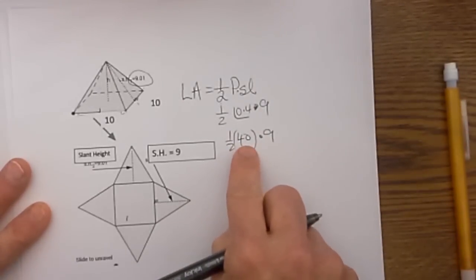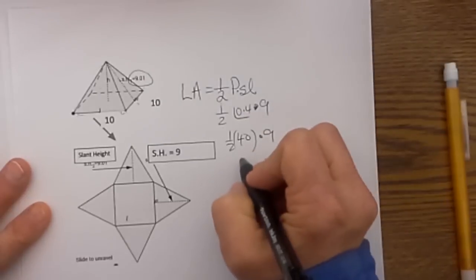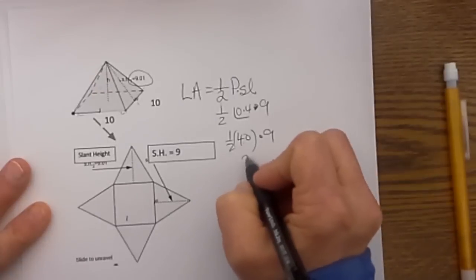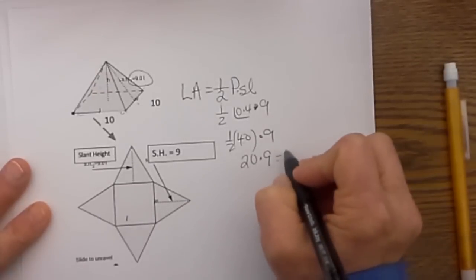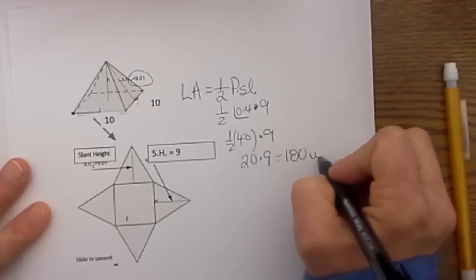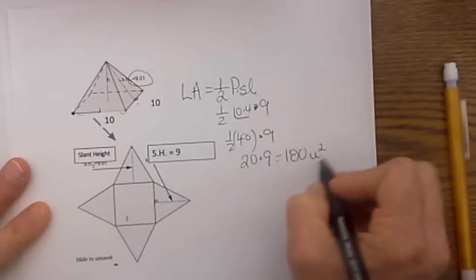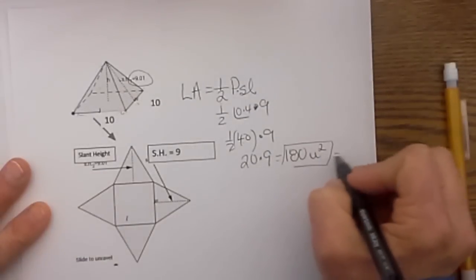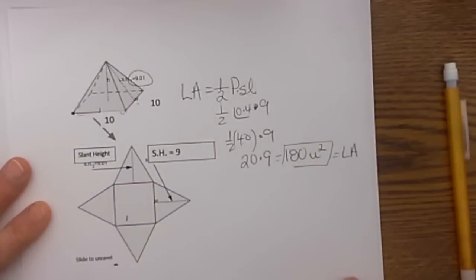So now we have 1/2 times 40 times 9 so that is 1/2 of 40 is 20 and 20 times 9 is 180. And this would be in square units whether it is inches or feet it is an area. So that gives us the lateral area of our pyramid.